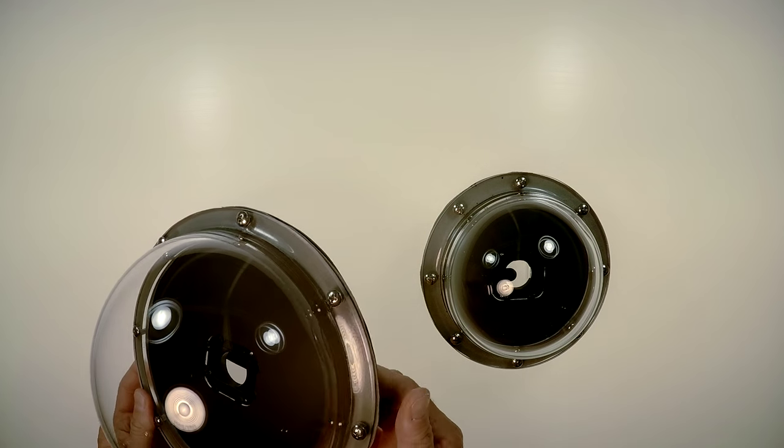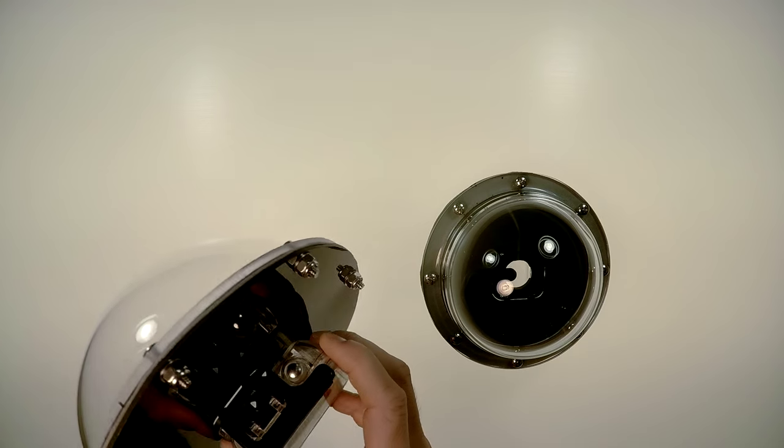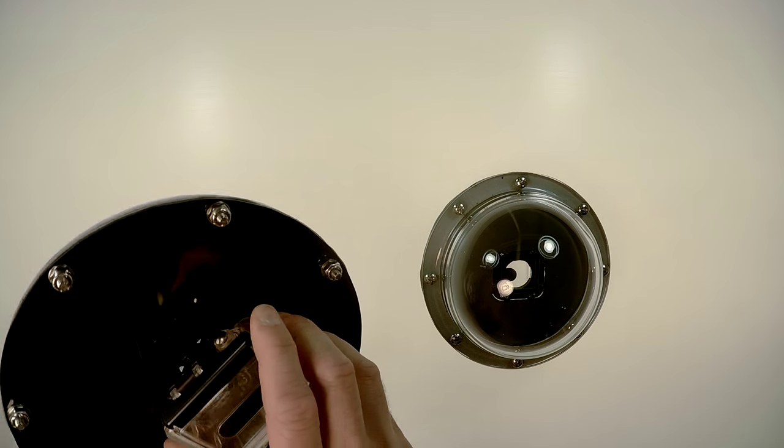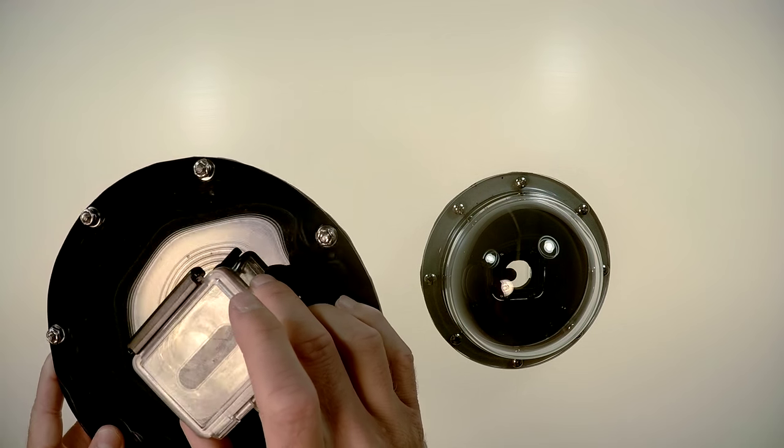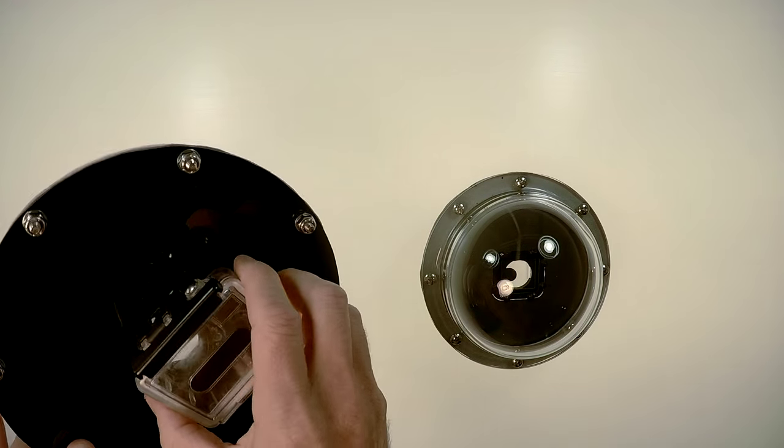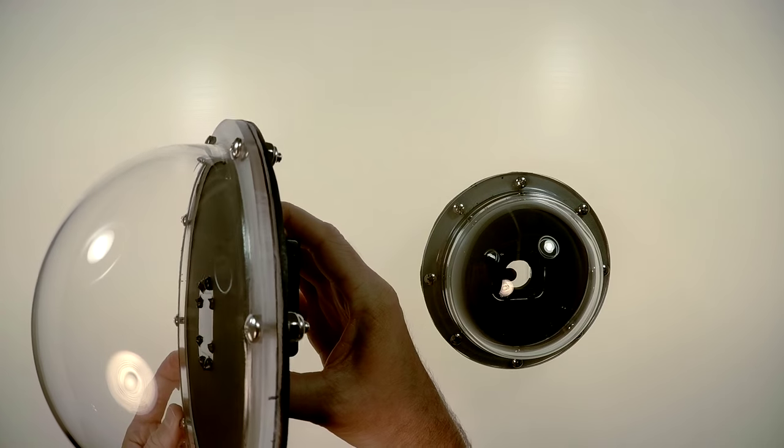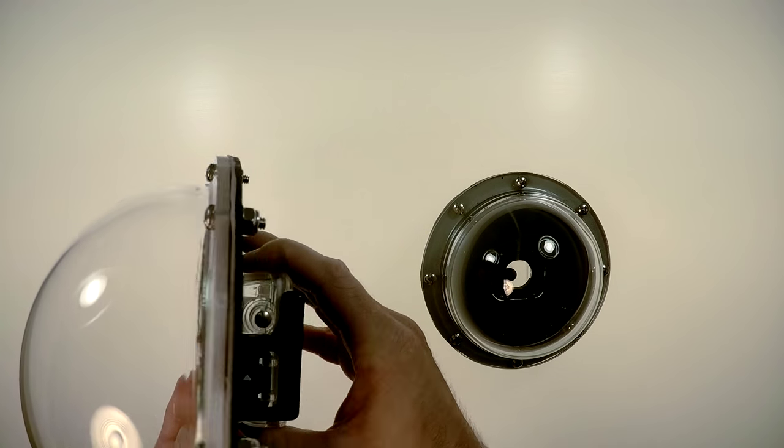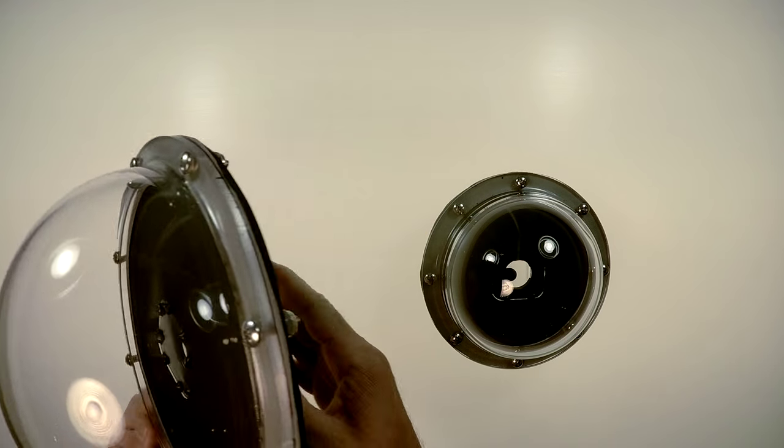Also when you're fully submerged, the dome wants to kind of do its own thing because it's got so much flotation, especially if you're using the GoPro mounting on a fixture of some sort. The dome tends to want to float into position. It's hard to get the knobs tight enough.